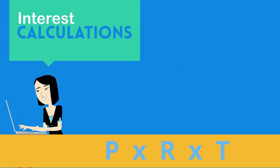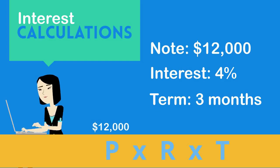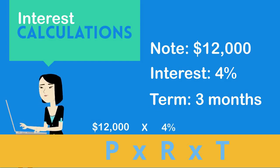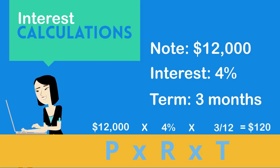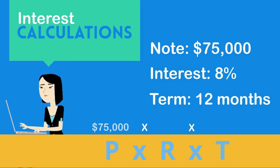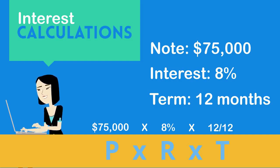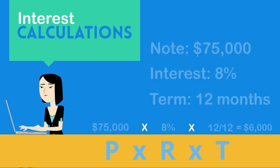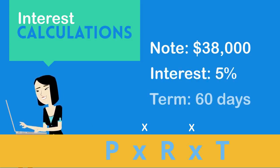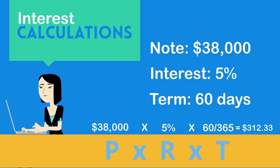Let's do a few examples. Assume a note for $12,000 at 4% interest for three months: $12,000 × 0.04 × 3/12 = $120. Or a $75,000 note at 8% for twelve months: $75,000 × 0.08 × 1 = $6,000. One more — a $38,000 note at 5% for 60 days: $38,000 × 0.05 × 60/365 ≈ $312.33.